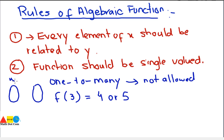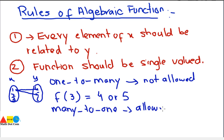If we have input values 1, 2, 3 and outputs 4, 5, 6, mapping 1 to both 4 and 5 is a one-to-many relationship — this means each input gives two outputs, so the relation is not a function. However, many-to-one is allowed: for example, f(3) = 4 and f(4) = 4 — two inputs giving the same output is permitted. One input giving two different outputs is not allowed.